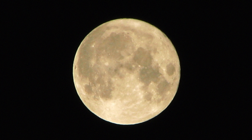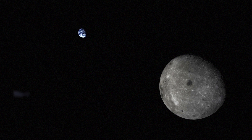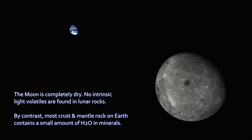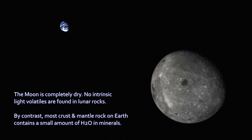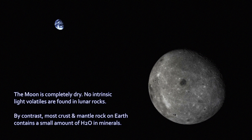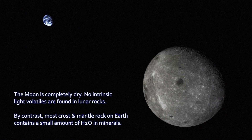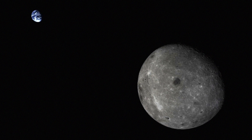Earth and the Moon are very different — compositionally different. The Moon has no water, no atmosphere. It doesn't look chemically like the Earth does. So if they formed together, shouldn't it look more like us?